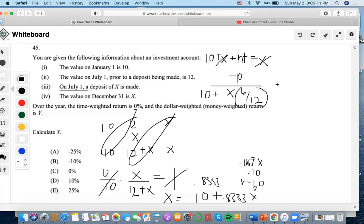They're saying the dollar-weighted return is Y. We found that X equals 60, so we're going to plug in 60. So 60 times 6, then divide by 12, is 30 plus 10, which is 40. So negative 10 divided by 40 is negative 0.25. That is why A is the final answer.